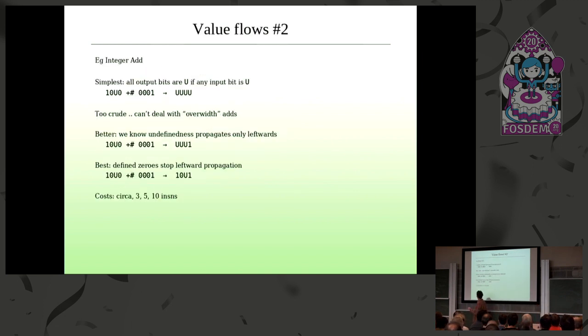So here's a good example. This is integer addition. And I have this running example where I'm adding one zero undefined zero to zero zero zero one. And there's three potential options we could take here. The simplest is just to say, if any input bit is undefined, then the whole output is undefined. So that's what the first line shows you. But this is actually completely useless in practice. Because what we will often do is pull out from memory, say, do a 64-bit load, of which we actually only care about the lower 16 bits, and then add another 16-bit value onto the 64-bit value we just pulled out.